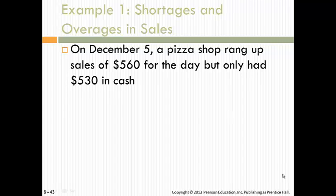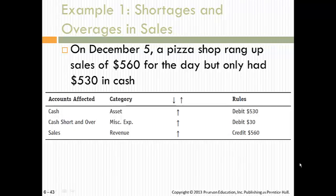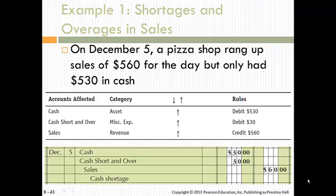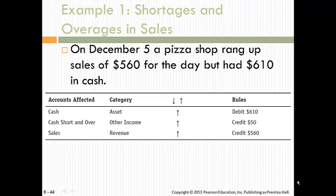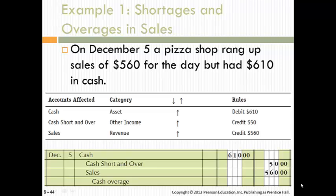Here's an example: a pizza shop rang up sales of $560 for the day but only had $530 in cash, so there's $30 missing. They debit $530 to cash and credit sales, but then have to do something with the missing $30 — by booking it to cash over and short, you can track by employee what's going on. In another example, the shop had $610 instead of $560, so the cash over and short becomes miscellaneous revenue. This is more of a retail business situation — if you're the bookkeeper or accountant, you want to keep track of these swings.